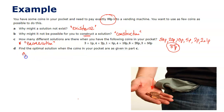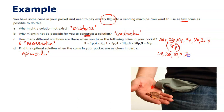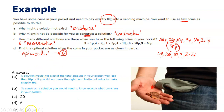The last part asks to find the optimal solution — that's an example of optimization. In this case, optimal means fewest coins. That would be 50p, 20p, 10p, 5p, 2p, 2p — six coins. So the optimization answer is six coins, which is correct.